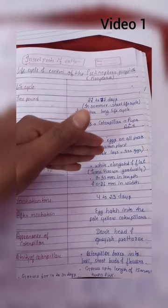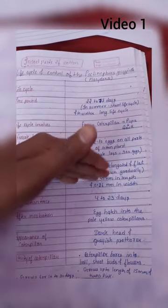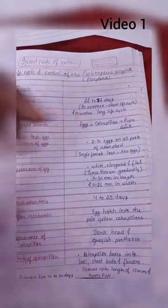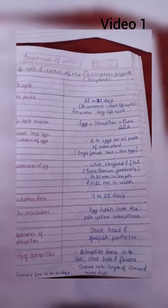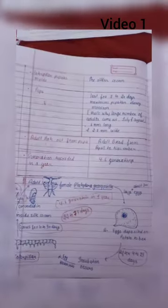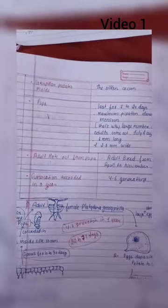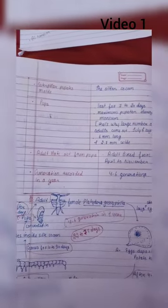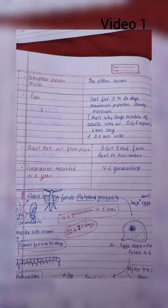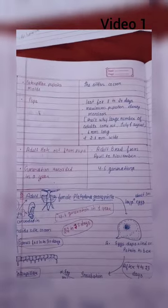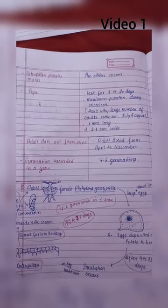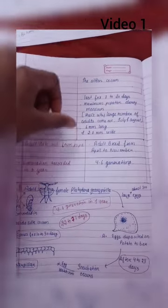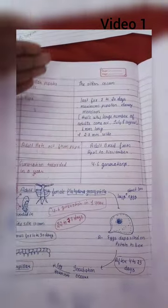Then caterpillar converts to pupa. The caterpillar pupates in a silken cocoon within the cotton boll. Pupa lasts for 7 to 20 days. Maximum pupation time occurs when large numbers of adults emerge.